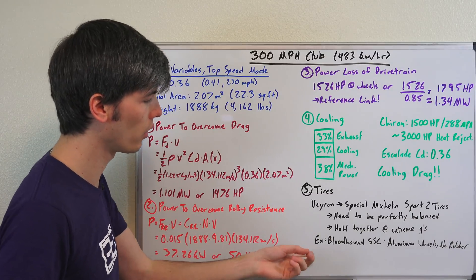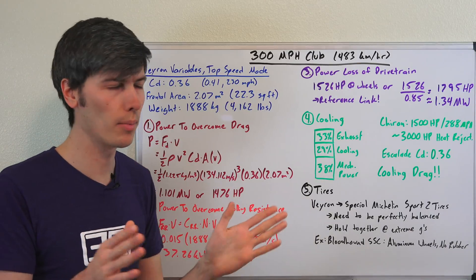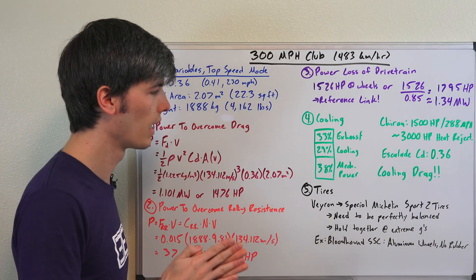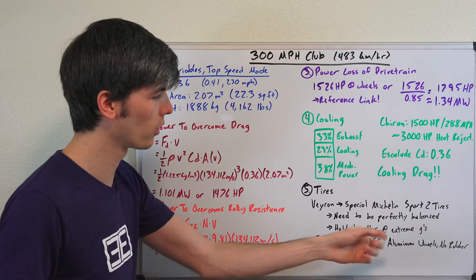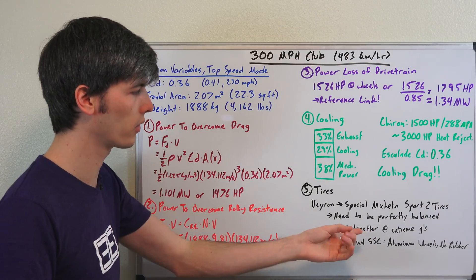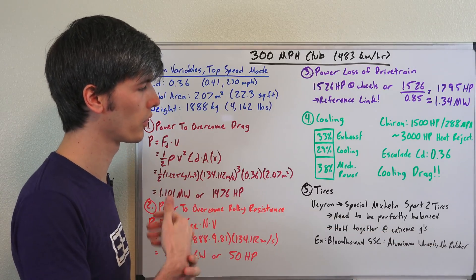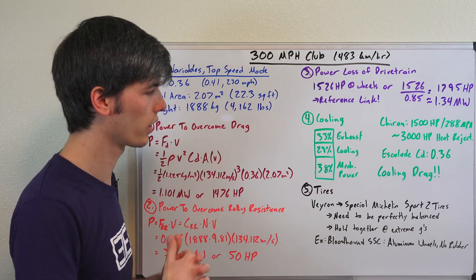And an example, an extreme example is the Bloodhound SSC, which uses aluminum wheels. There's no rubber on it. They're going for the land speed record. Not a good idea for road cars because you don't really have any traction with an aluminum wheel. But if you're just going in a straight line, it's smart to do because an aluminum wheel will hold together, whereas the rubber at those G-forces that it's experiencing is just going to kind of shred apart.